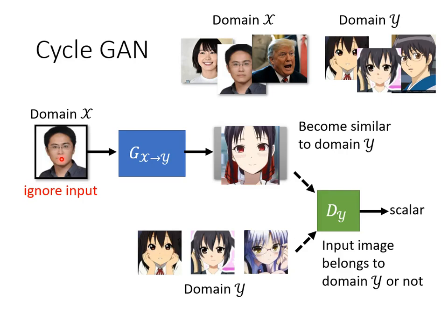How do we solve this problem and strengthen the relationship between the input and the output? You will find that when we discussed conditional GAN, we encountered the same problem — if the discriminator only looks at Y, it may ignore the generator's input. But here, if we want to learn from unpaired data, we have no way to directly apply the idea of conditional GAN, because conditional GAN requires paired data to train the discriminator. We don't have this kind of information. How to solve it?